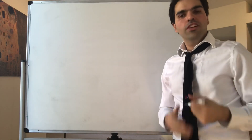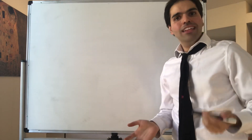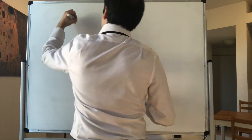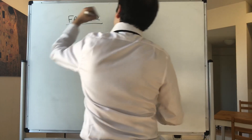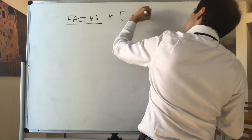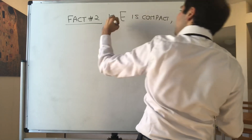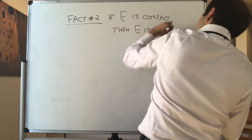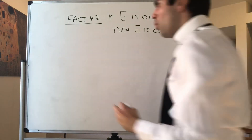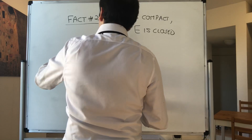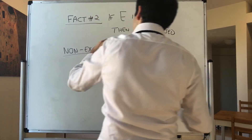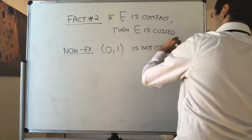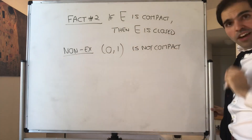Now let's prove the second property of compact sets — namely, that compact sets are not only bounded but also closed. Fact two: if E is compact, then E is closed. Yet another reason why the open interval (0,1) in R is not compact. Now let's prove this.